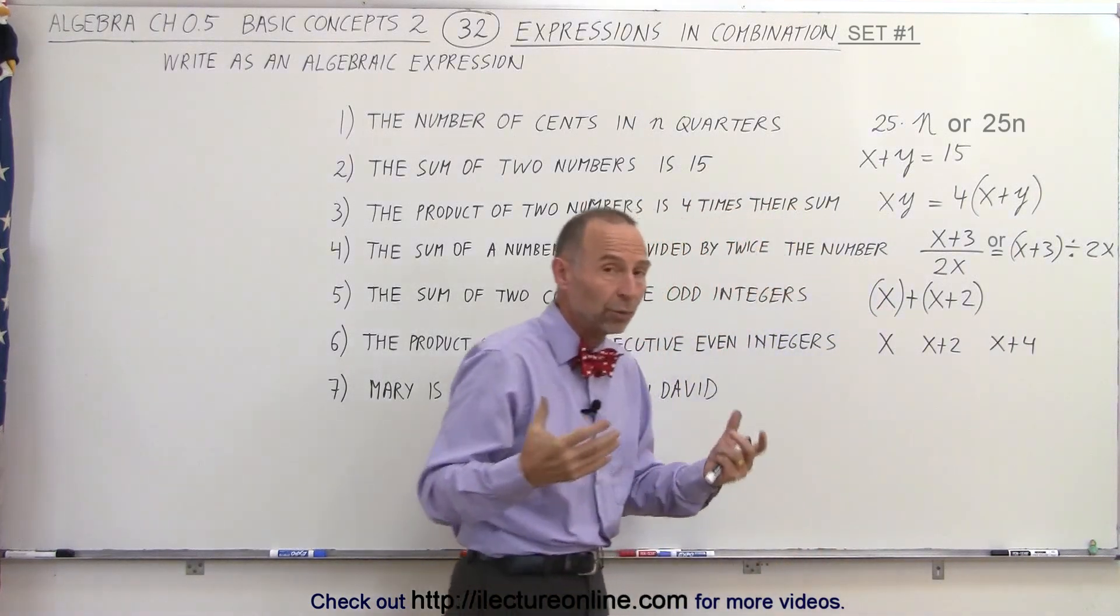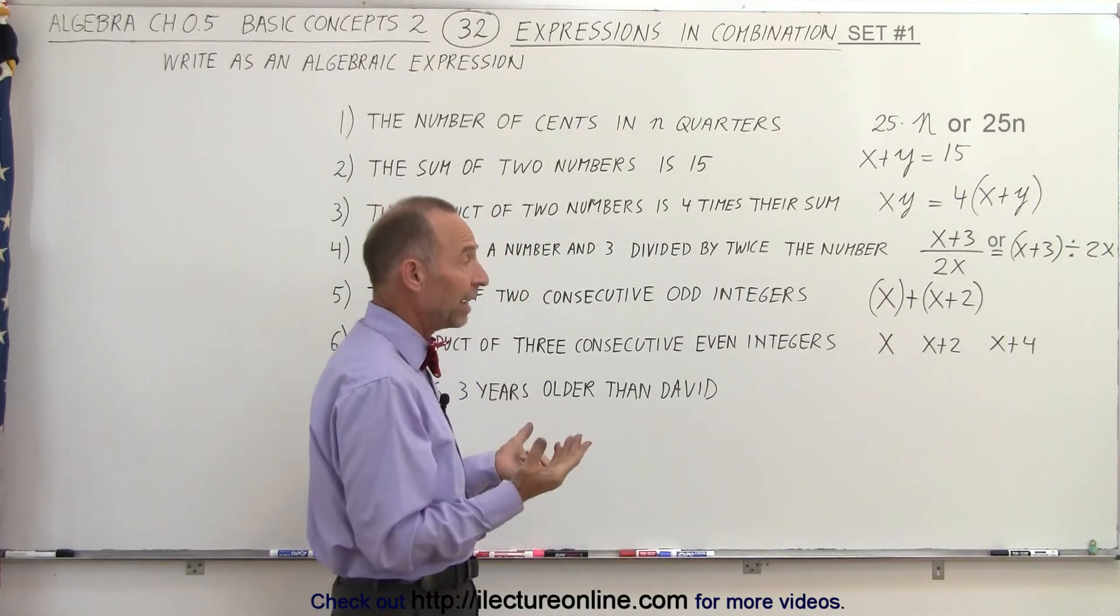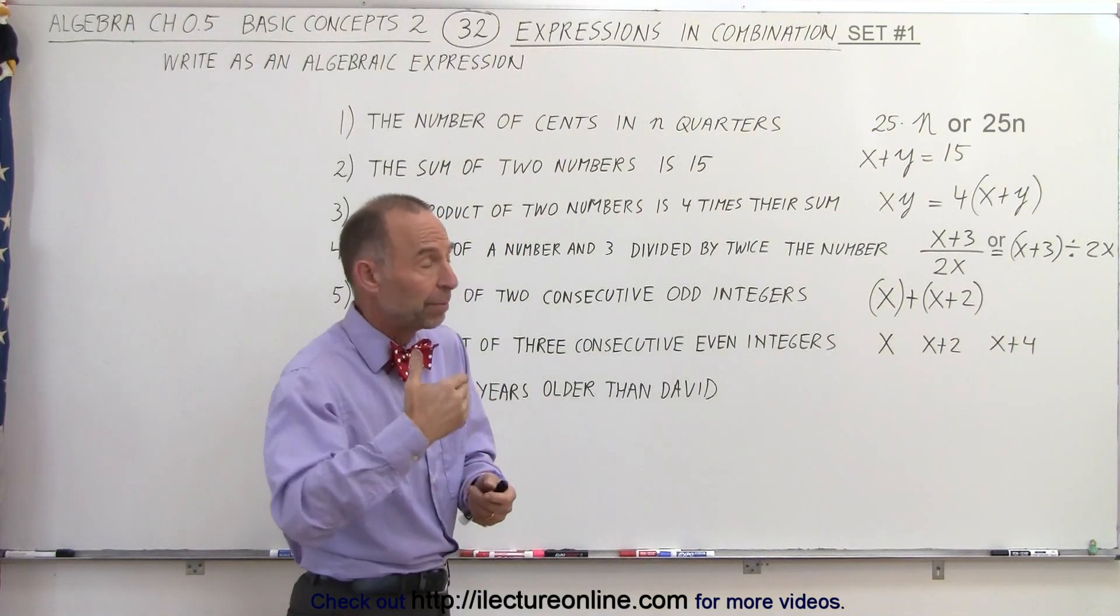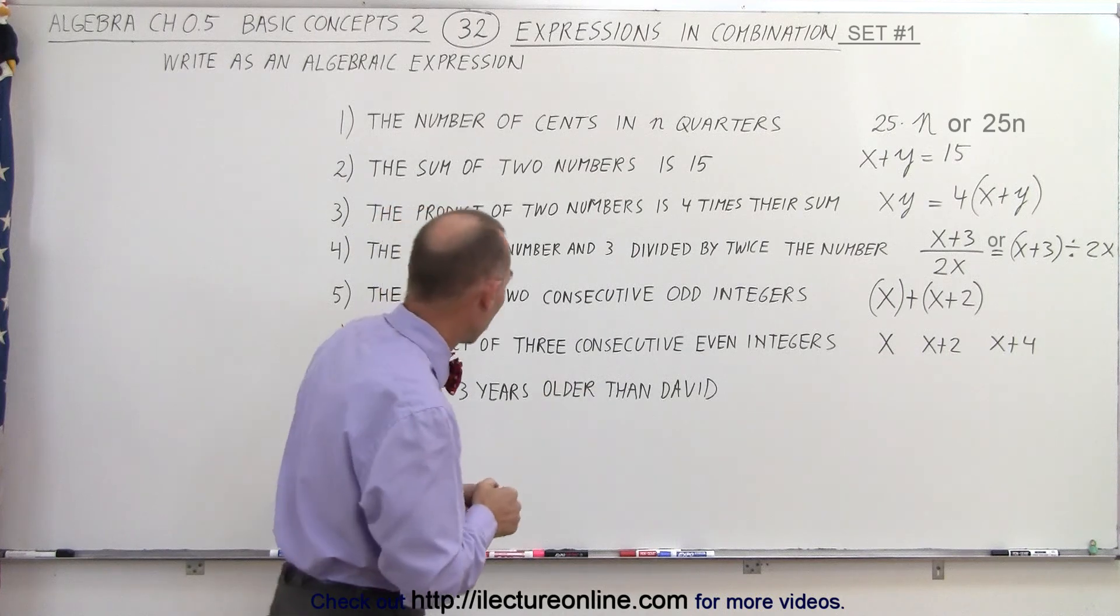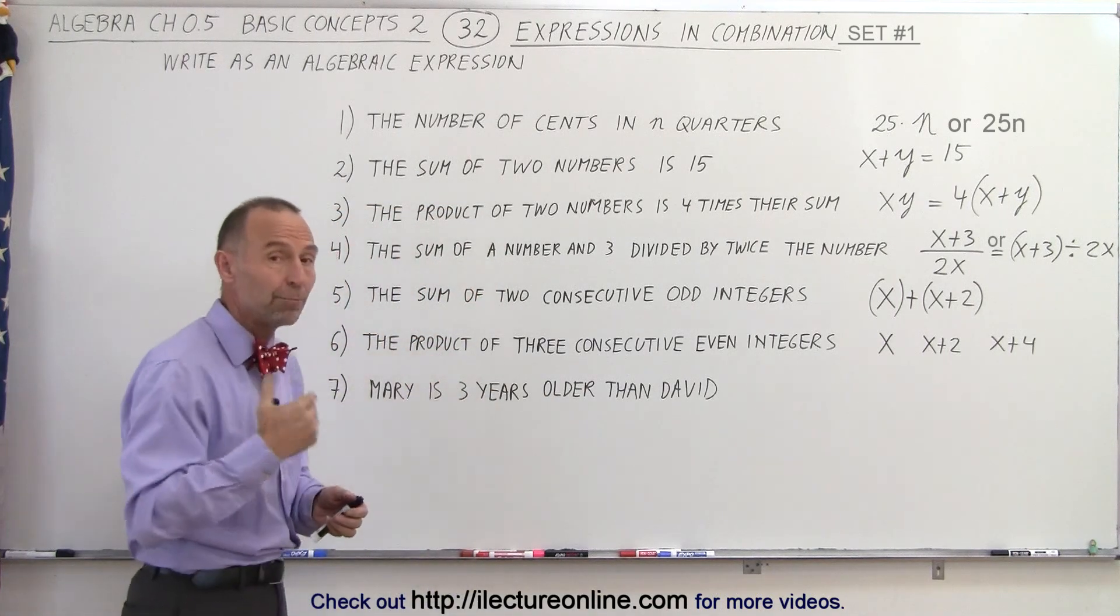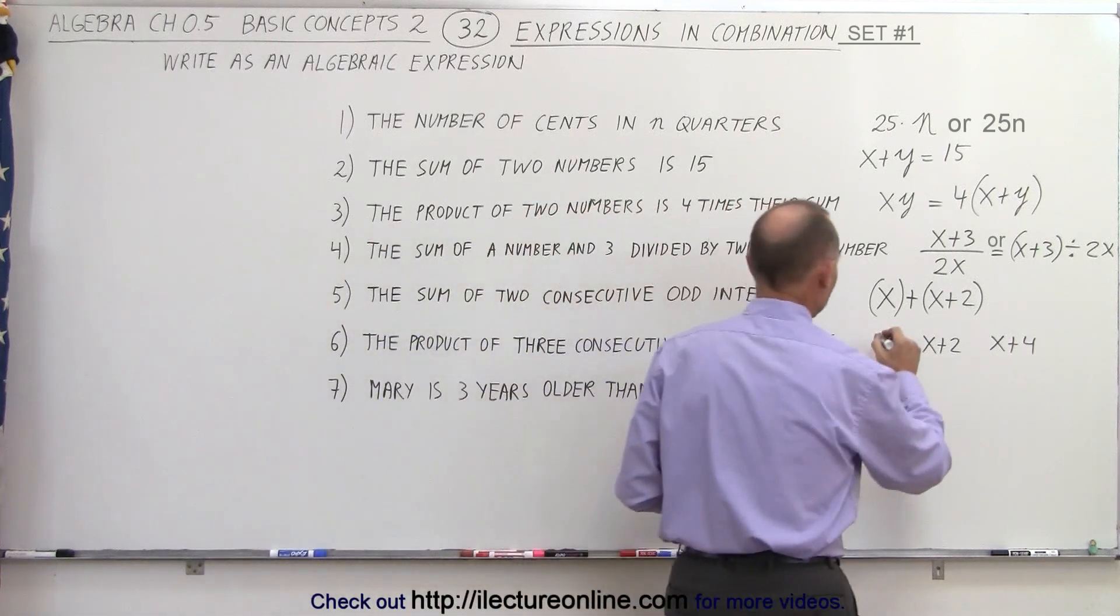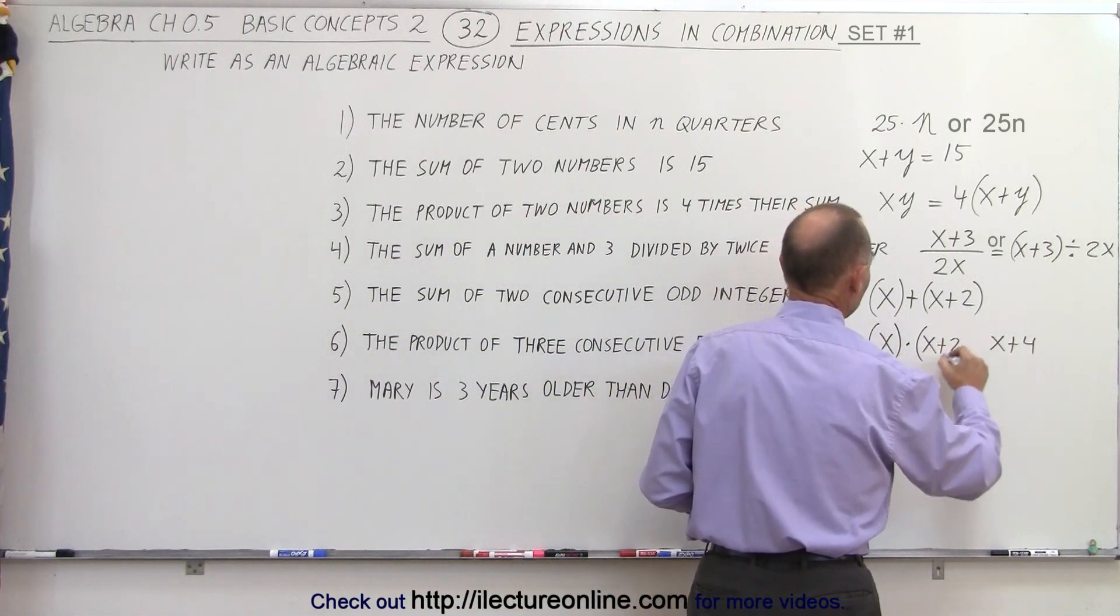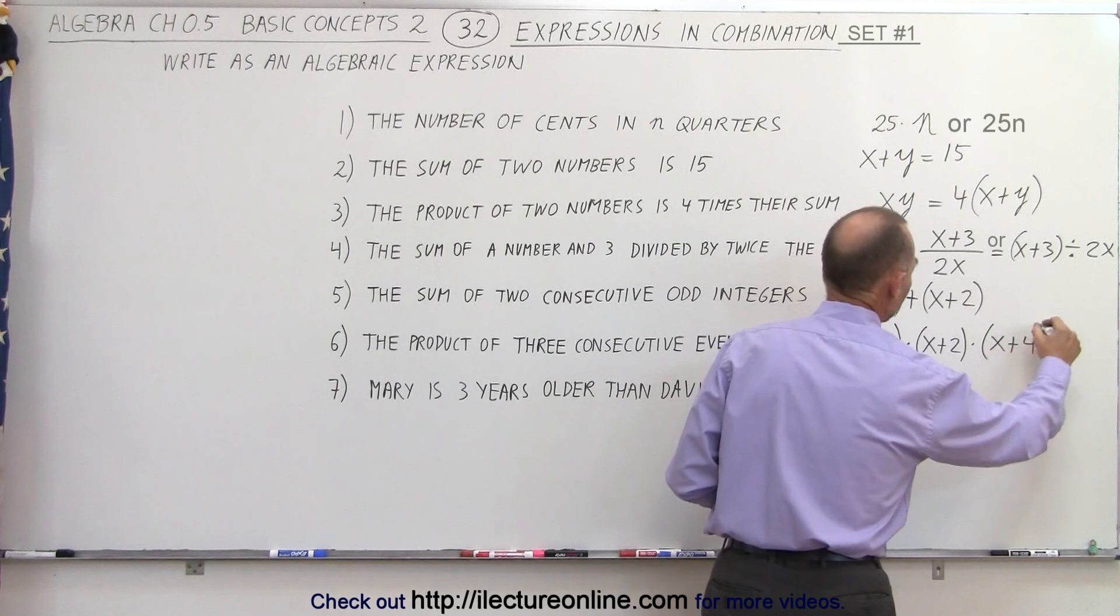Notice that it doesn't matter if they're odd integers or even integers. They can always be represented by the unknown x. And then even if they're odd or even, the next one would be plus two, the next one plus four, and so forth. But in this case, we read the word product, which means we have to multiply them. So that means x multiplied times x plus two multiplied times x plus four.